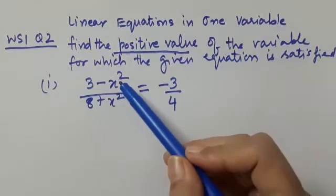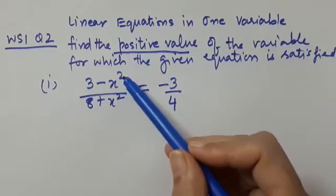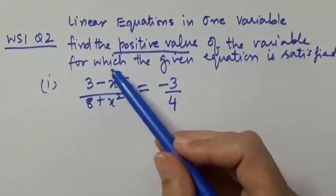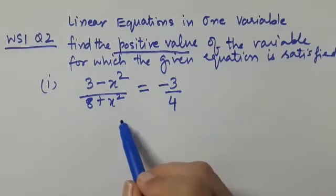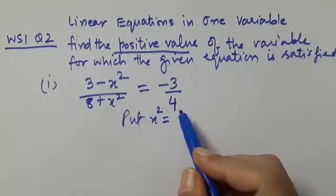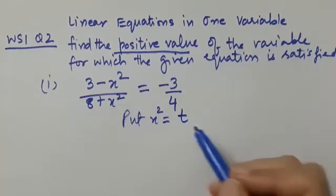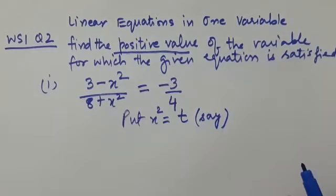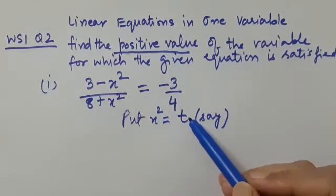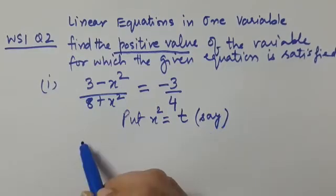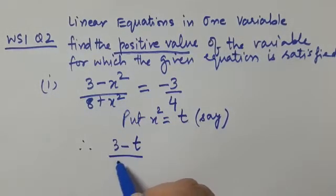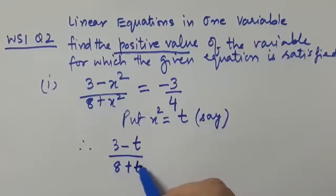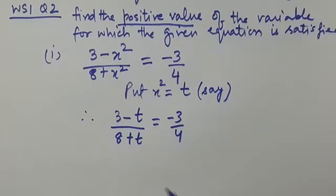In the numerator and denominator, x² is common — you have a term involving x² in both. So what we do is put x² = t. If you take x² = t, the new equation formed will be: (3 − t) / (8 + t) = −3/4. These kinds of equations you have solved before — what process do you follow? Yes, cross multiplication.